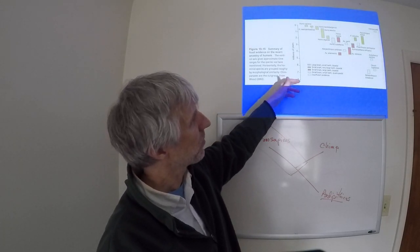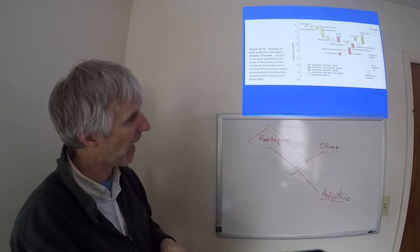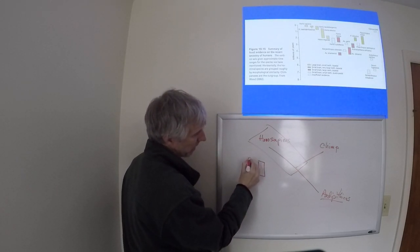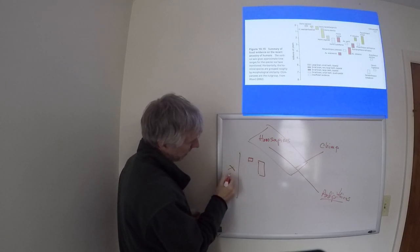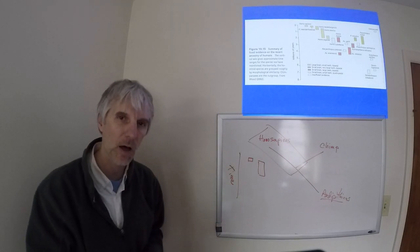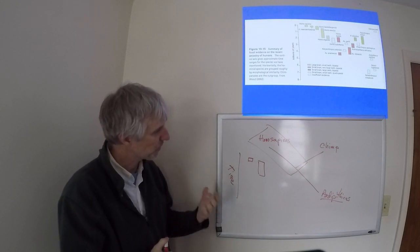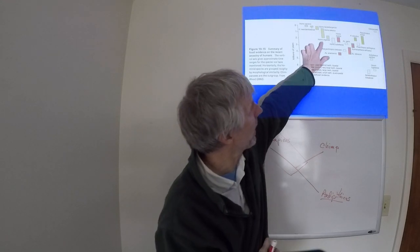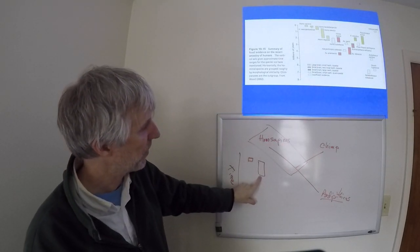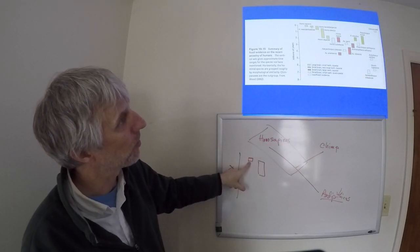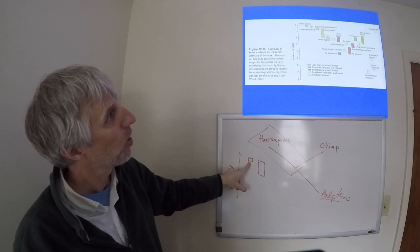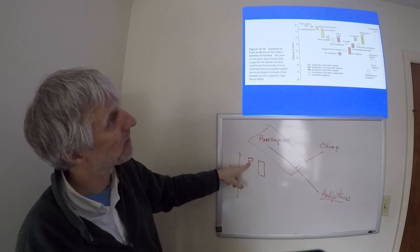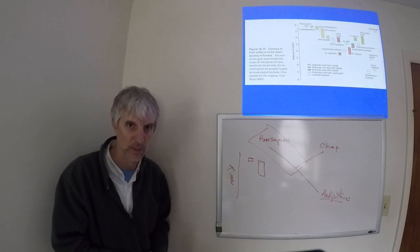On the y-axis here, we have time, but they've added a new wrinkle here. They've given us bars. The bars tell us how long these particular genera and species were around on the planet. Notice that Homo erectus here is on the planet a lot longer than Homo heidelbergensis. Homo erectus is around for a couple million years, whereas Homo heidelbergensis is around for less than a million years.